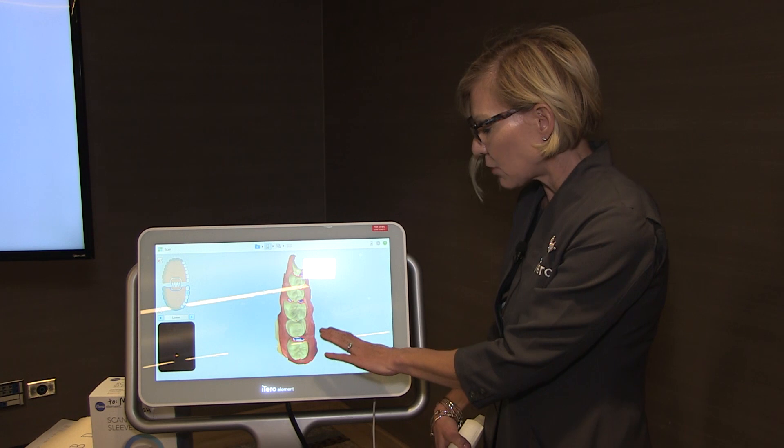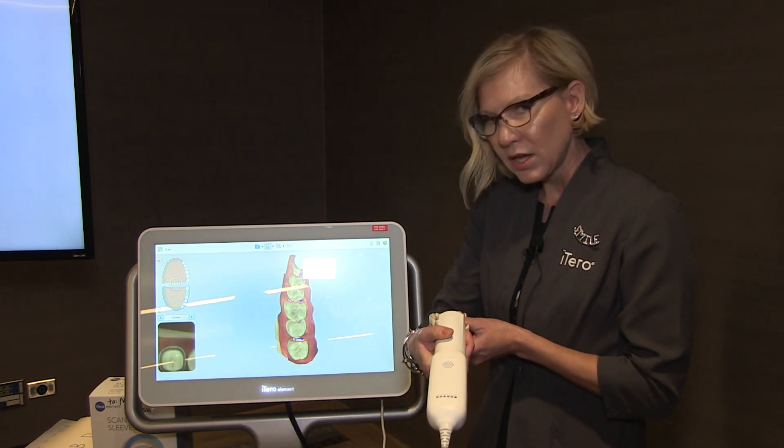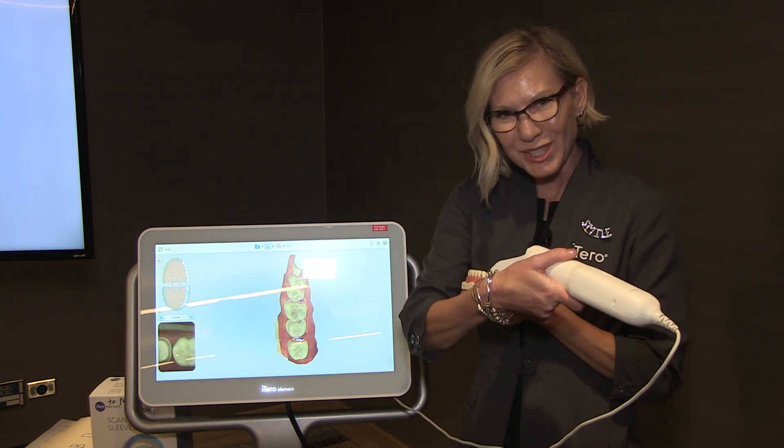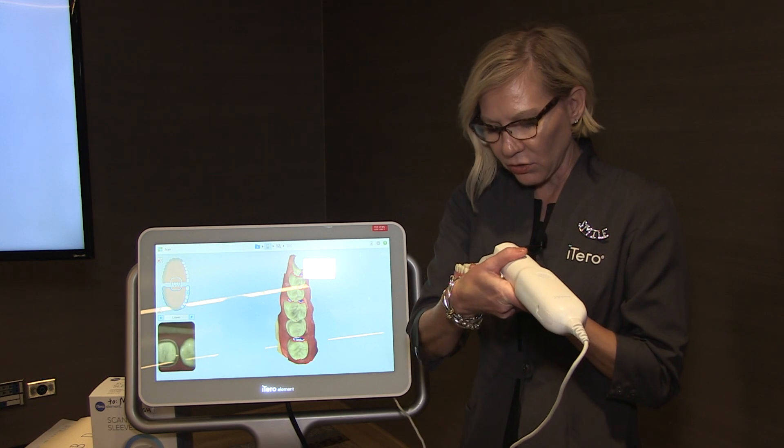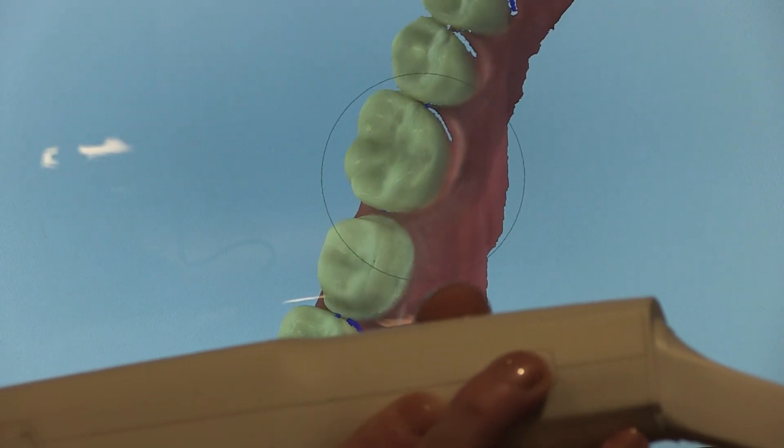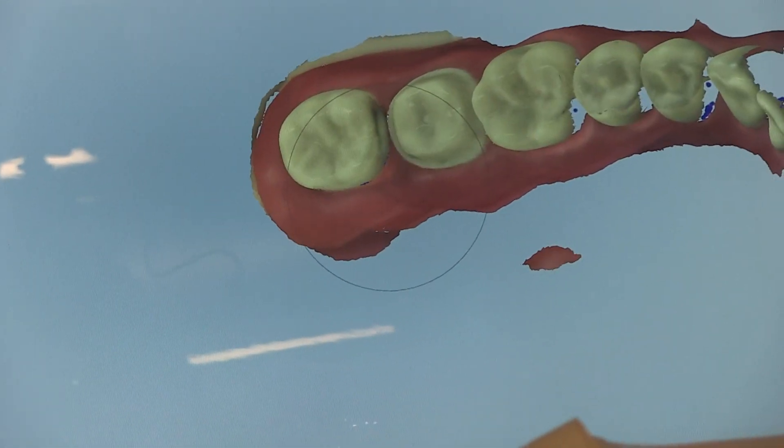So it allows me to capture just that voided area without capturing any additional information. And then if I bring the wand out to the side, rather than directly into the mouth, I can angle the lens so that it points back. And as you can see, it fills in that distal contact with tooth color. And then I'll roll forward and capture the mesial contact there.